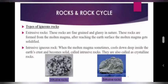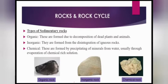Intrusive igneous rocks: when molten magma cools down deep inside the earth's crust and becomes solid, it is called intrusive rock. These are also called crystalline rocks, as they cool slowly inside the earth. In the picture, the first image shows an intrusive igneous rock.